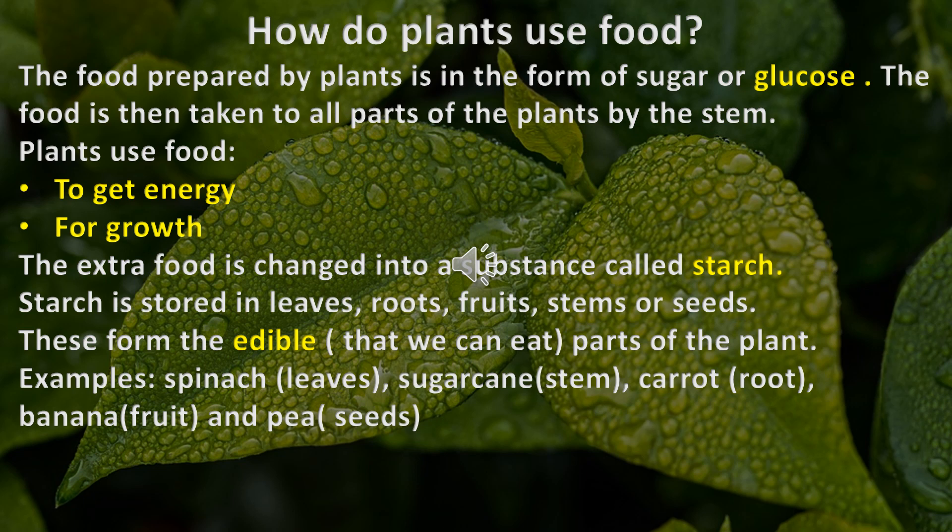Starch is stored in leaves, roots, fruits, stems, or seeds. These form the edible parts — edible means that we can eat parts of the plant. For example, spinach in the form of leaves, sugarcane in the form of stem, carrot in the form of root, banana in the form of fruit, and pea in the form of seeds.